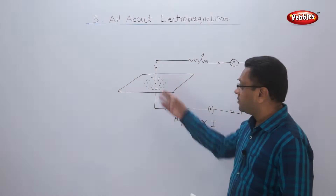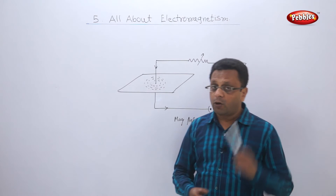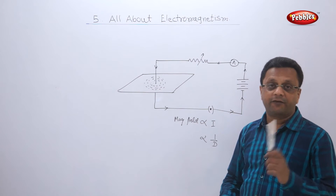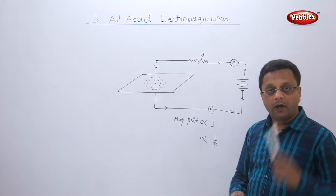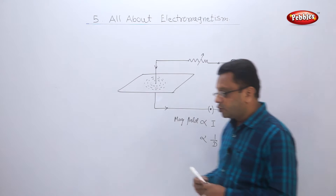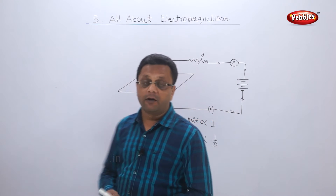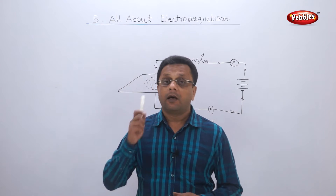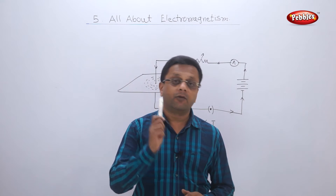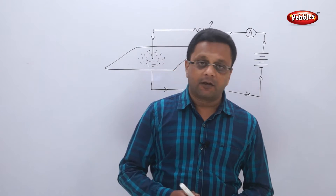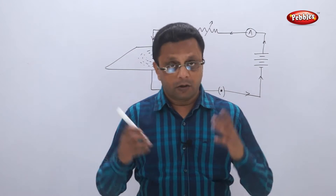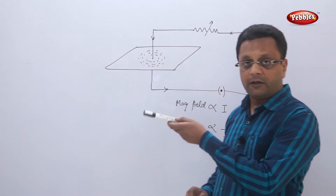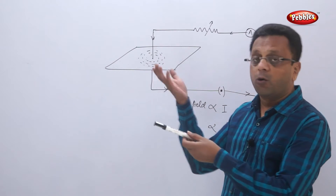One thing is missing here — we are not shown the direction of the magnetic field. To show the direction of the magnetic field, one rule is used, called the right-hand thumb rule. Now watch carefully: suppose this is a current-carrying conductor.